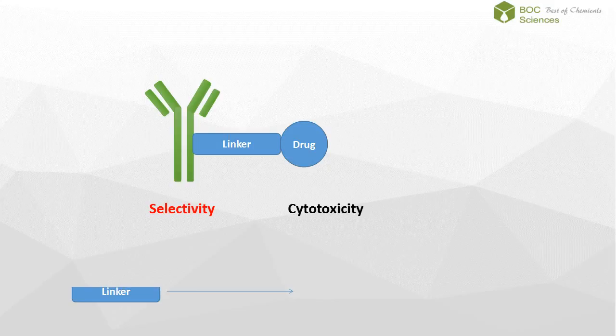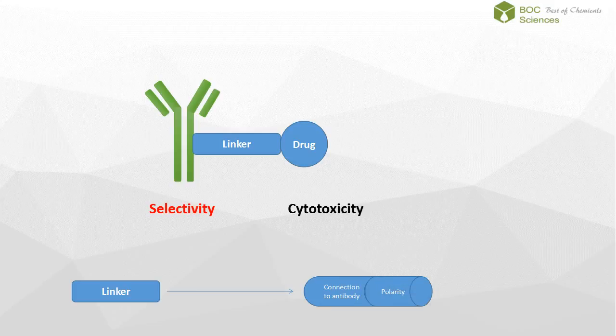The linker portion of the ADC can be split into distinct modules as shown in the picture: 1. The connection of the linker to the antibody. 2. The polarity of the linker. 3. The trigger that initiates the cleavage of the drug. And 4. The self-immolative spacer that liberates the drug.